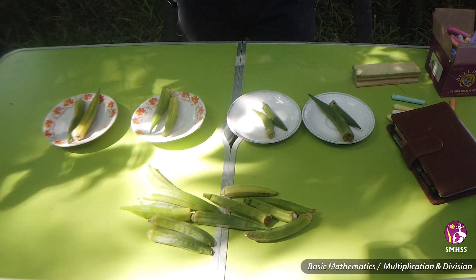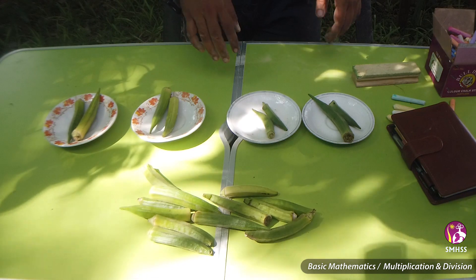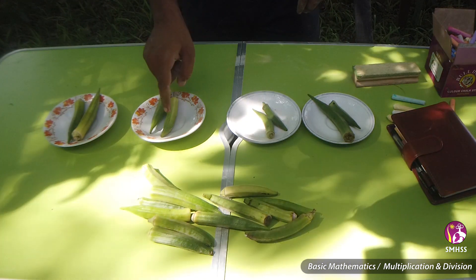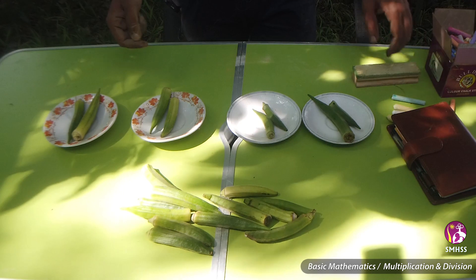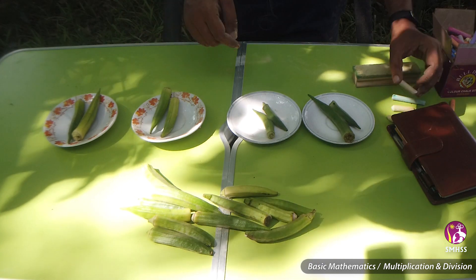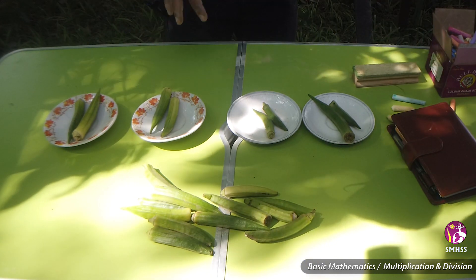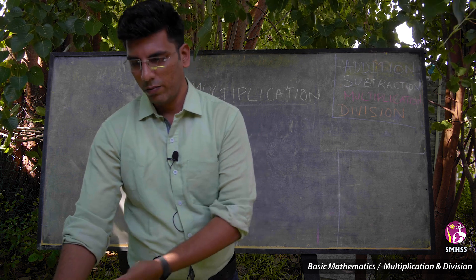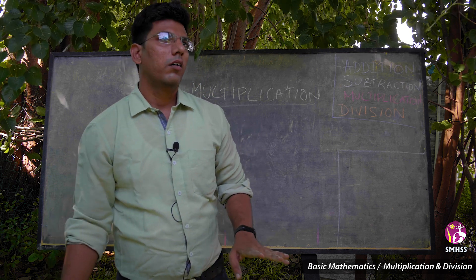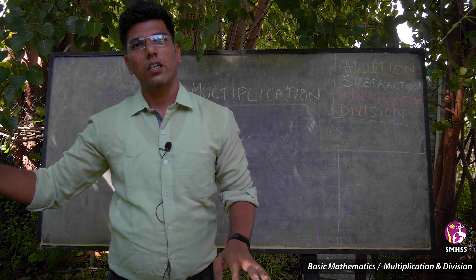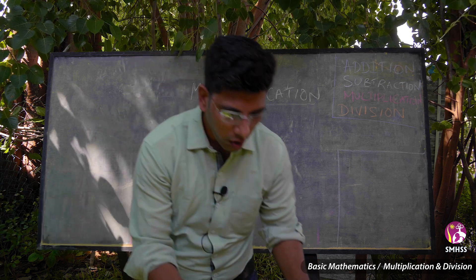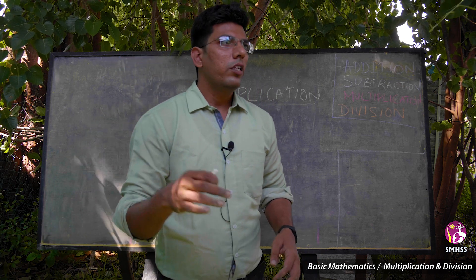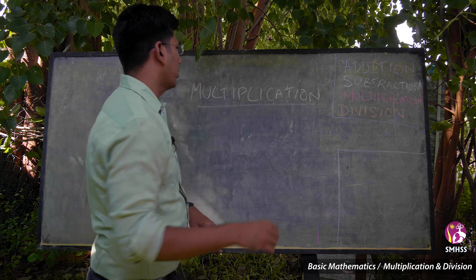How many ladies fingers have you filled so far? You can count and say 1, 2, 3, 4, 5, 6, 7, 8. For 4 plates, you can easily say 8 ladies fingers. But when it comes to 20 or 35 plates, you need not count again and again. In that case, we use multiplication.